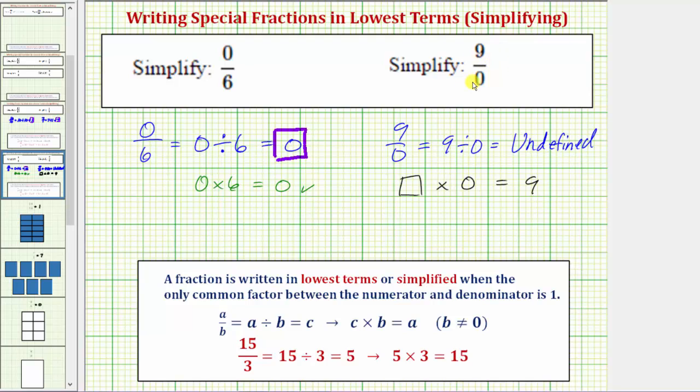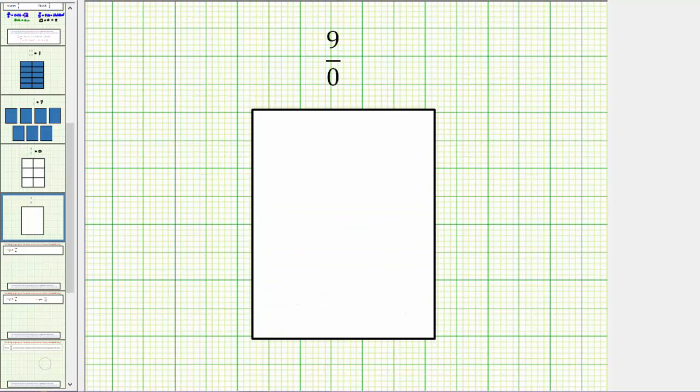If we look at this fraction conceptually, we always begin by defining one whole, which in this case would be this one rectangle. But because the denominator is zero, the next step would be to cut or partition one whole into zero equal parts or pieces.